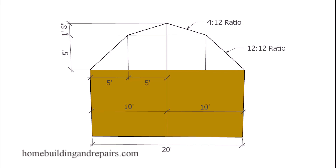Here's another question I received from one of our viewers. They wanted to know how many different ways you could lay out a gambrel roof, and in my opinion they're almost endless. Let's get started with the easiest way possible, which would be to simply use a ratio that you're familiar with, like a 12 and 12 and a 4 and 12. You can start from the center or move this over in either direction to build your roof.